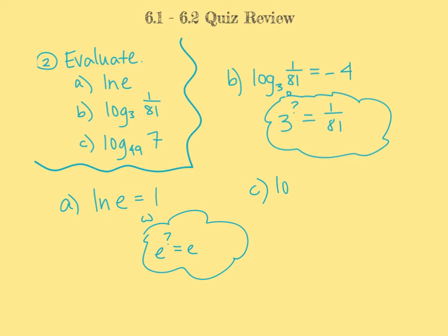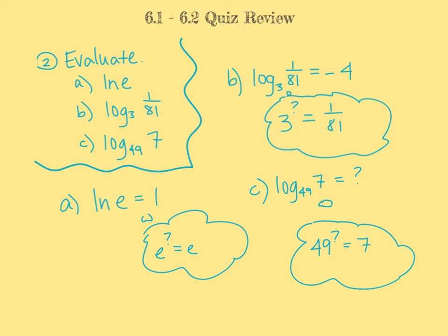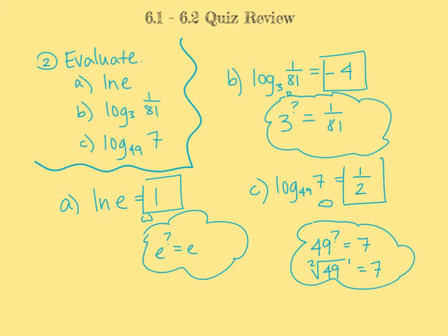In part C, we have log base 49 of 7, and we want to know what that equals. Our thought process, since we're looking for an exponent, is: 49 to the what gives us 7? We need to take the square root of 49. We know that the square root of 49, raised to the first, gives us 7. Therefore, 49 to the 1/2 power equals 7, because a square root means a 1/2 power. So the answer is 1/2. Summary: part A is 1, part B is negative 4, and part C is 1/2.